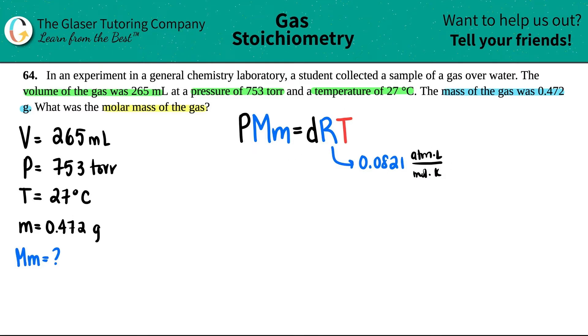Pressure has to be in atm, but they gave it to us in torr. So the first thing is we have to go from torr to atm. Remember your conversion: one atm equals 760 torr. The easy way to go to atm is just divide by 760. If you wanted to go from atm to torr, you would multiply by 760.